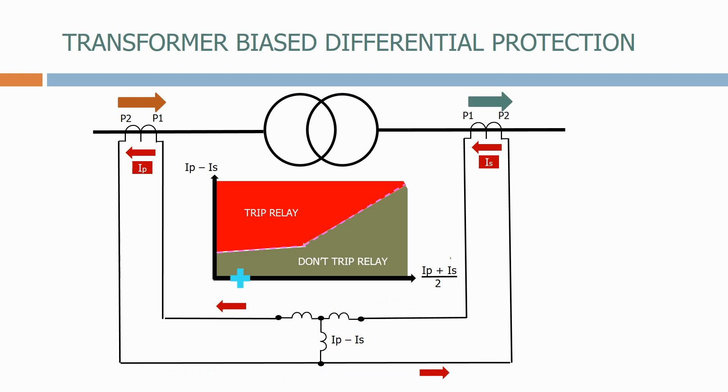Let's now add a fault on the transformer inside the protection zone. As the secondary current now flows in the opposite direction to the primary current,